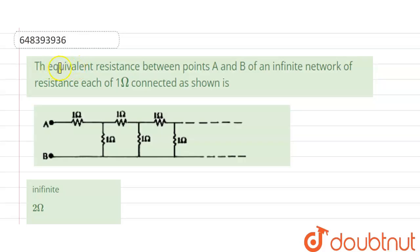Hello friends, our question is: the equivalent resistance between points A and B of an infinite network of resistance, each of one ohm connected as shown is.